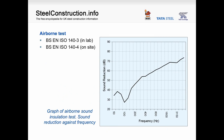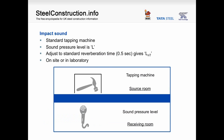A typical airborne sound insulation test results graph is shown on this slide. As you can see, the insulation performance varies with frequency — the sound reduction for low frequency sounds is less than for high frequency sounds. Standard procedures for sound insulation testing are given in BS EN ISO 140-3 for laboratory testing and dash 4 for on-site testing.